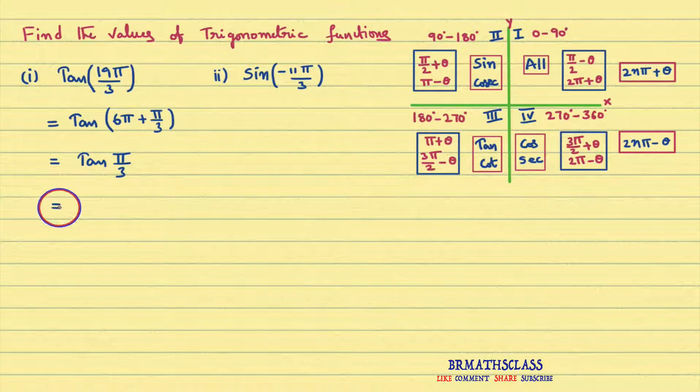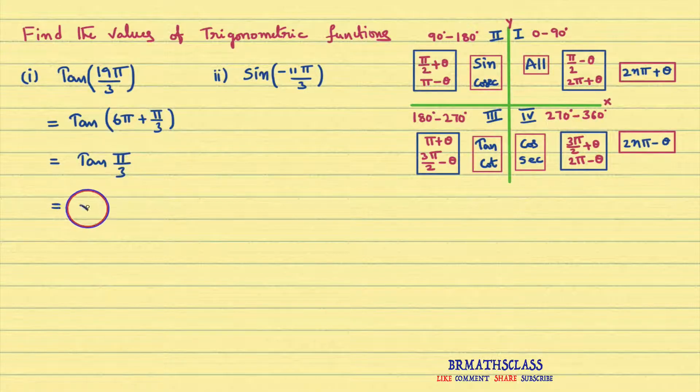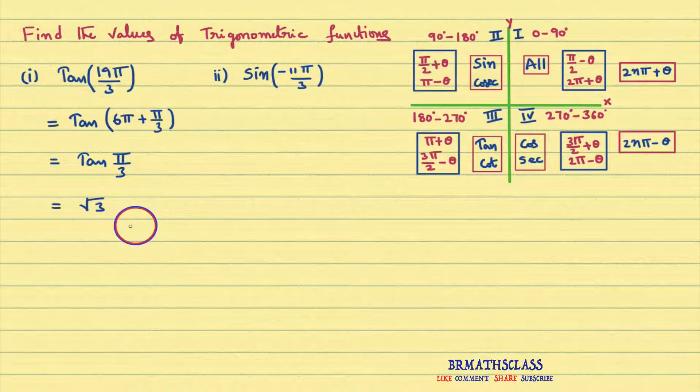Therefore, tan(6π + π/3) is plus tan π by 3. That equals — from the trigonometry table, we know that π by 3 means 60 degrees, and tan 60 degrees value is root 3.